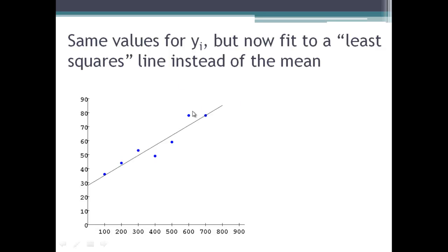Now we have the same values of y sub i, but now we have a fitted line. We call it the least squares line, and you'll see a little bit more about what that means in just a second.